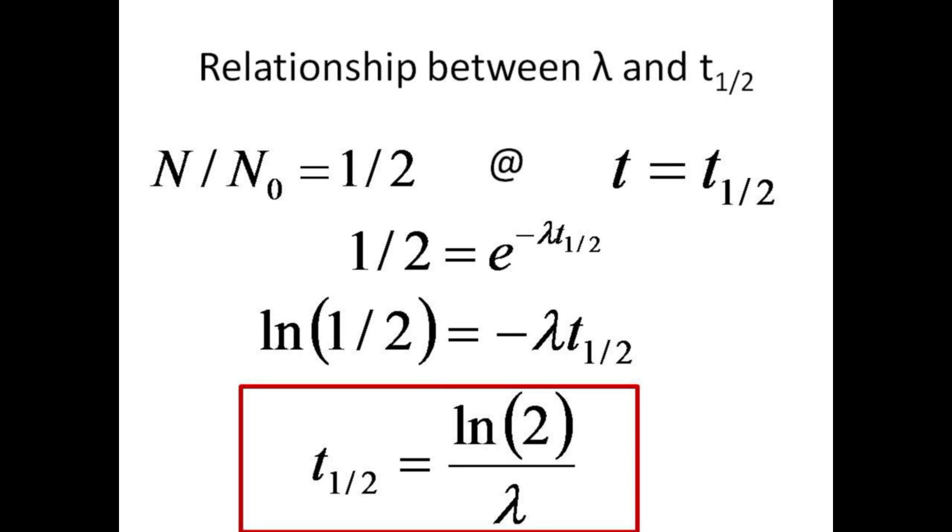One can make the connection between half-life and decay constant by setting the ratio of N over N0 equal to one-half when the time t is the half-life. Then one-half equals e raised to the minus lambda t one-half. Taking the log of both sides gives log of one-half equals minus lambda t one-half. The negative of the log of one-half is just the log of two. So the half-life equals log two divided by lambda. Thus, measuring lambda yields the half-life.